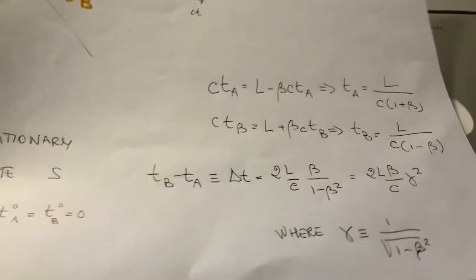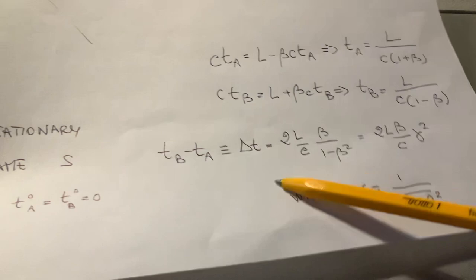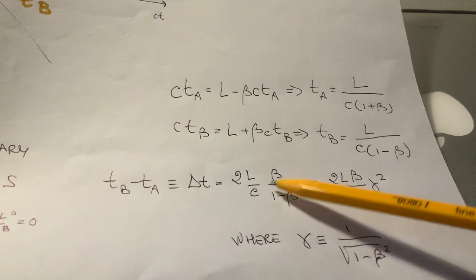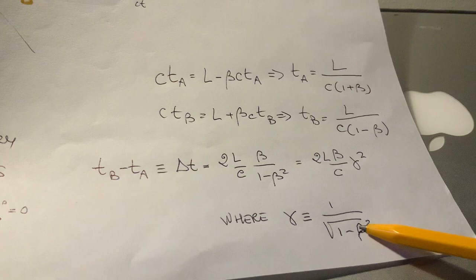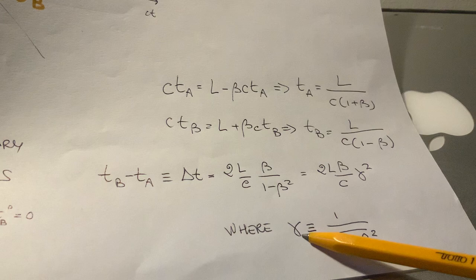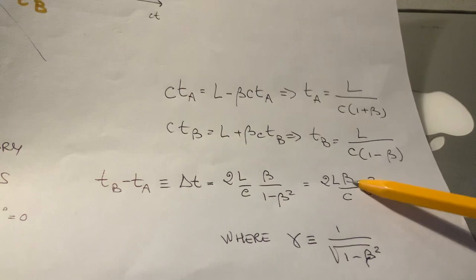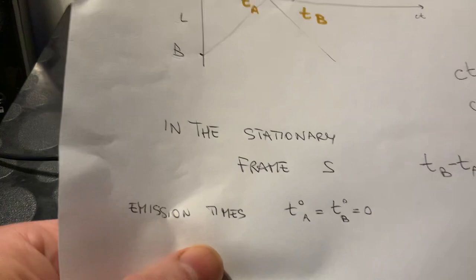What is the time difference between the two? Delta T, you take the difference between these two, and you get 2 times L over C beta divided by 1 minus beta square. And since 1 minus beta square is 1 over gamma square, gamma is called Lorentz boost factor. You can rewrite this as 2L beta divided by C times gamma square.